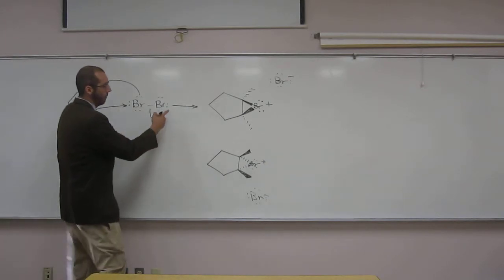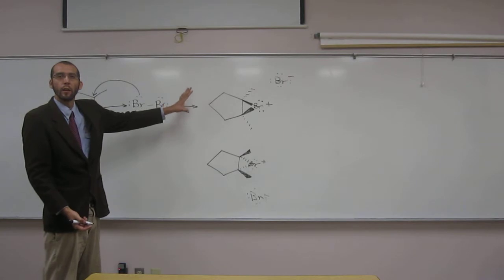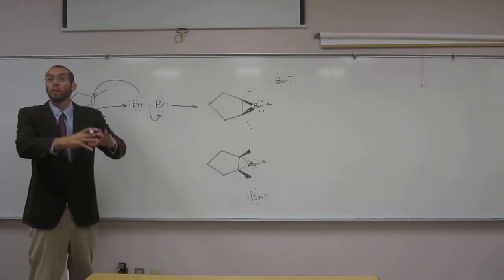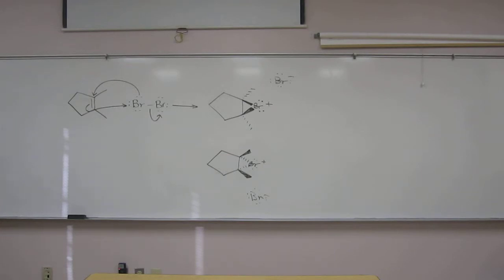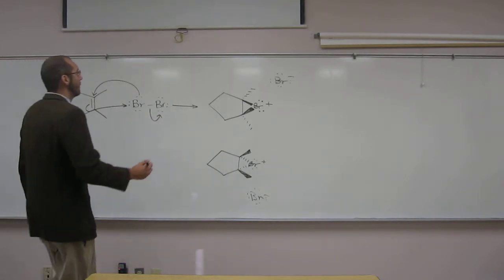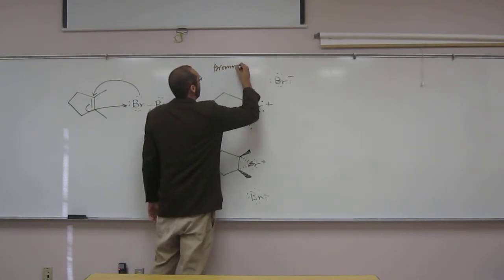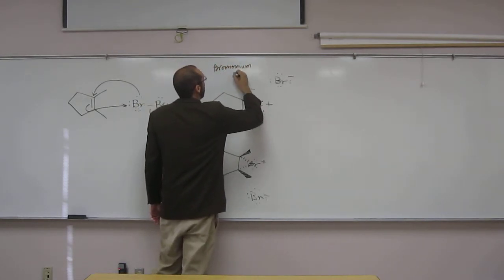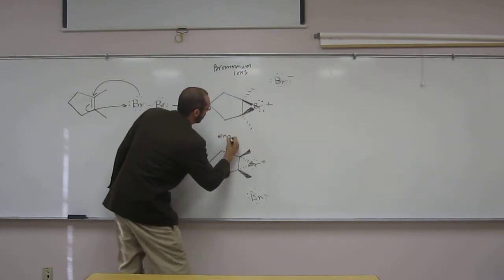So we can form these two intermediates. What do we call these again? Enantiomers. Enantiomers. But the type of intermediate they are are? Bromonium. The bromonium ion. So bromonium ions. And like you guys said, they're enantiomers.